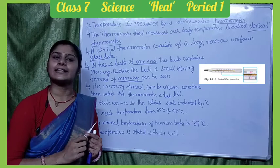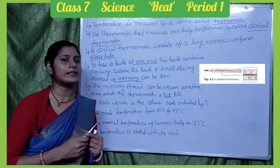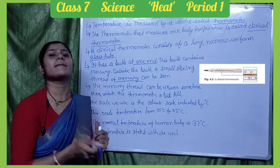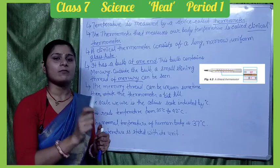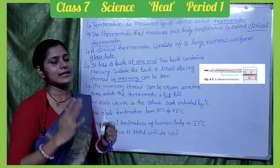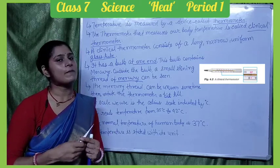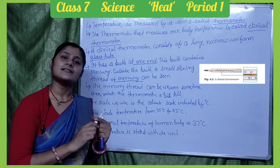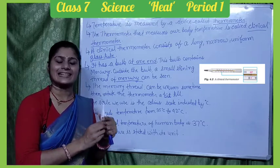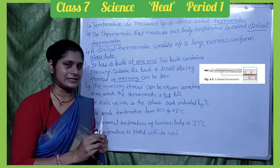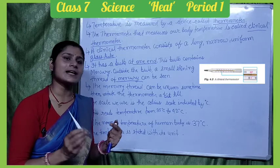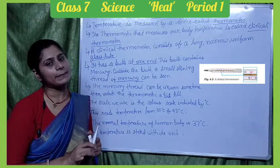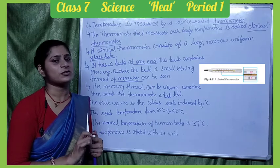Wash the thermometer with cold water to bring the mercury below 35 degrees Celsius. Then place the thermometer in the mouth or armpit for 1.5 to 2 minutes. After that, we will know the exact temperature of the body.